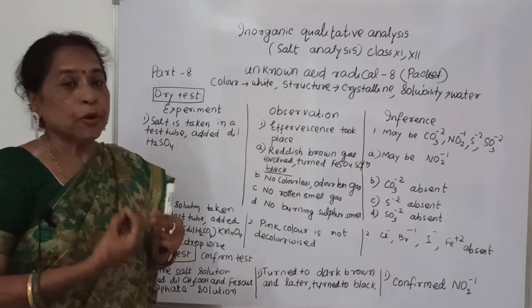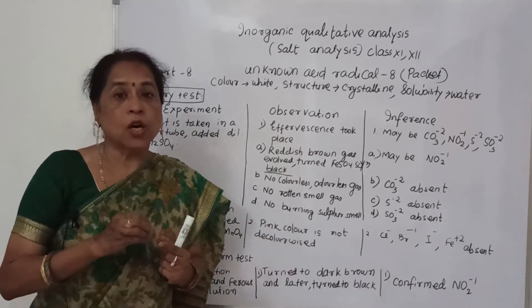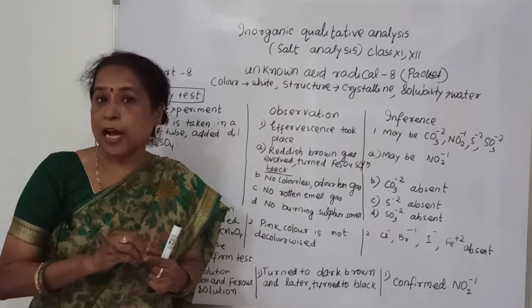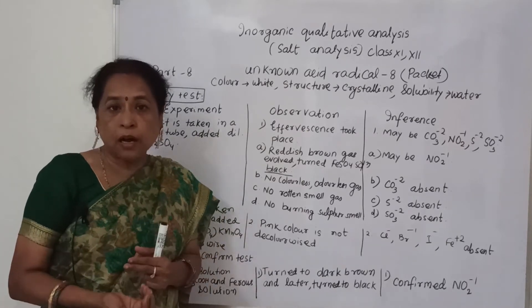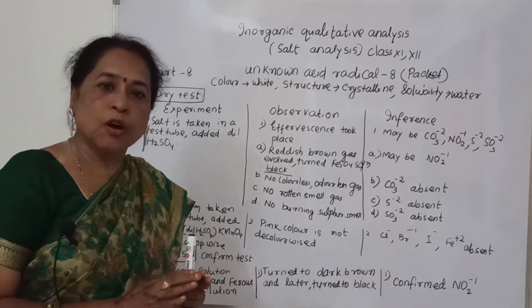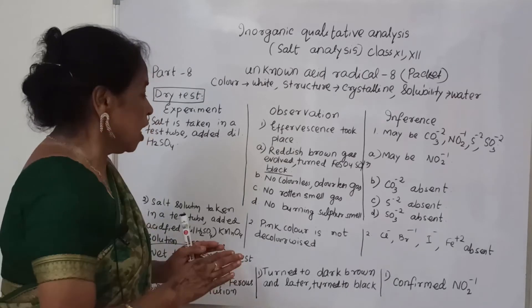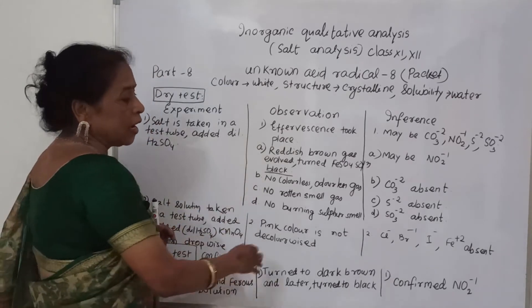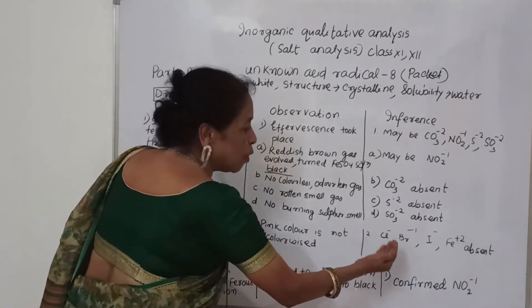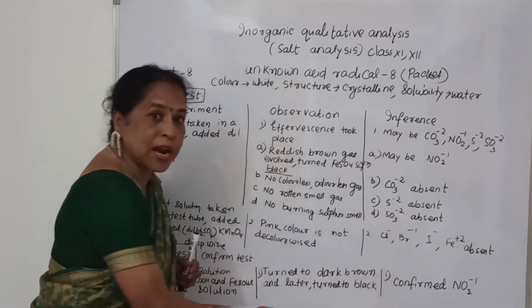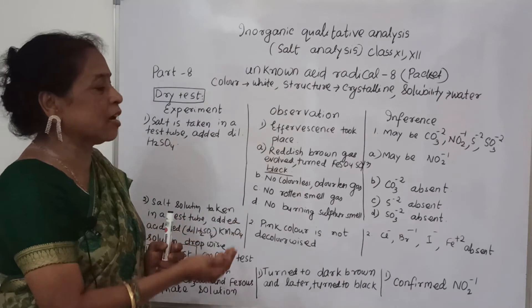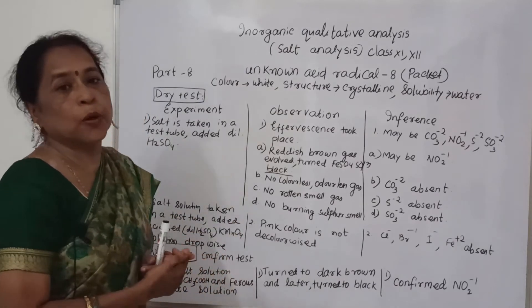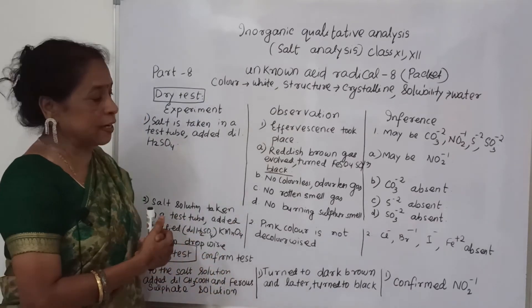The color of potassium permanganate is pink. Since the pink color is not discharged, chloride, bromide, iodide, and also the basic radical Fe²⁺ are absent.